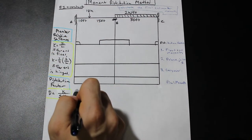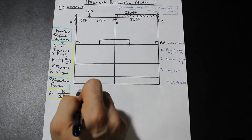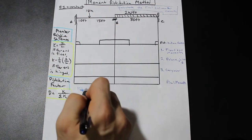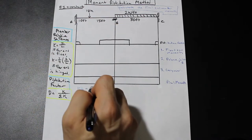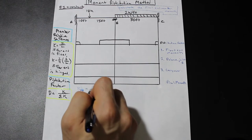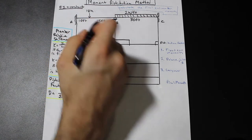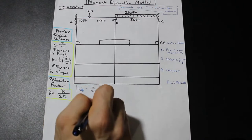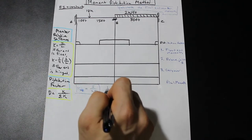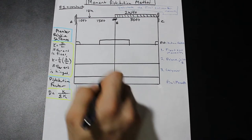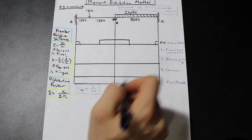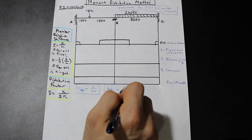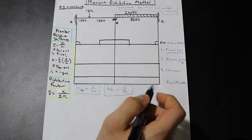So we have k for section A-B. Following the formula, we have i over l, so i over 25 for that portion. Then k_BC — the stiffness for this portion is simply i over 30, i over l.